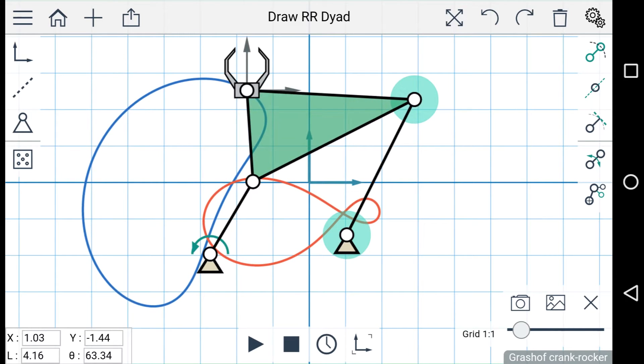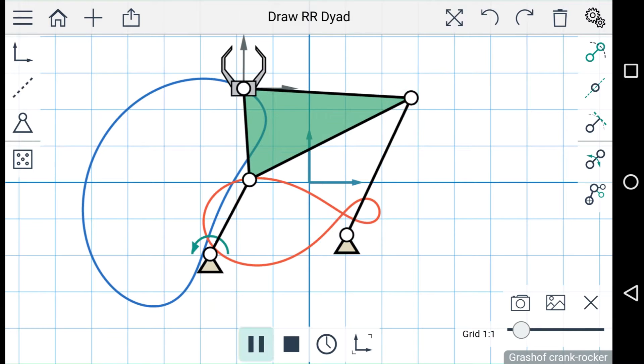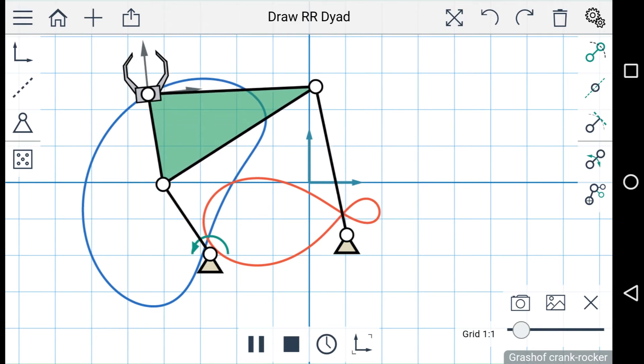You'll notice at the bottom of the screen, the playback menu has appeared, and you can use this to animate the linkage. Just press play, and the driving link will begin to turn.